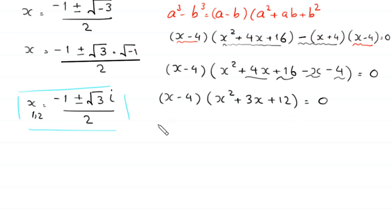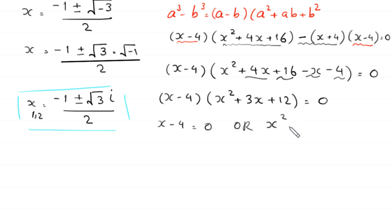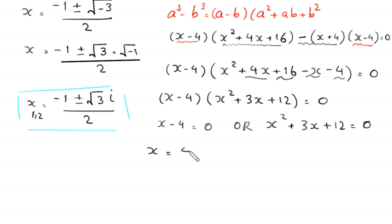From this factored form, either x minus 4 equals 0, giving x equals 4, or x squared plus 3x plus 12 equals 0. x equals 4 is the third value of x, the third solution of this equation.